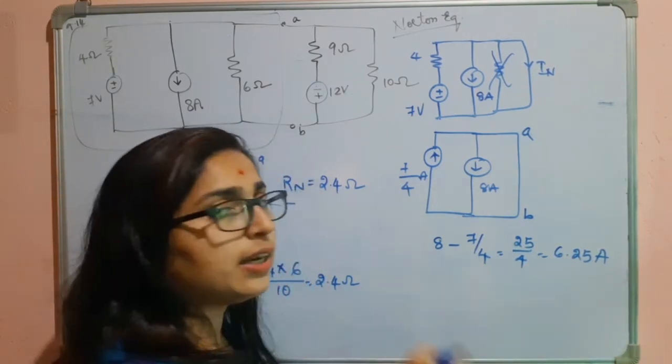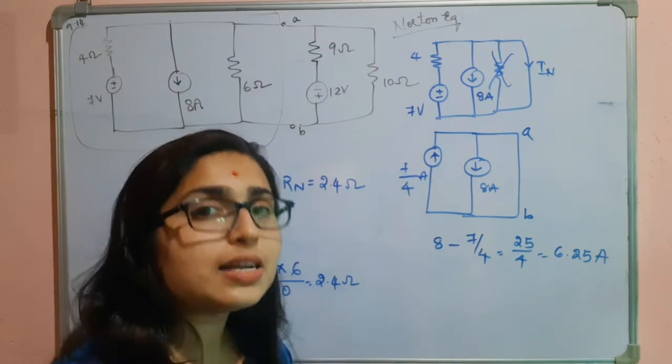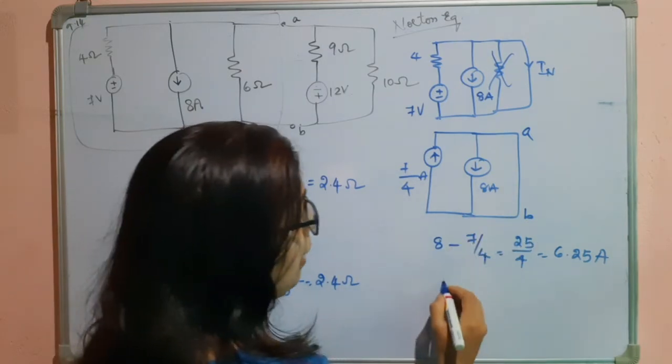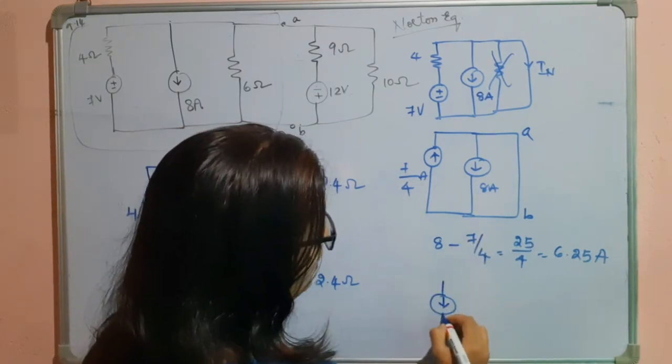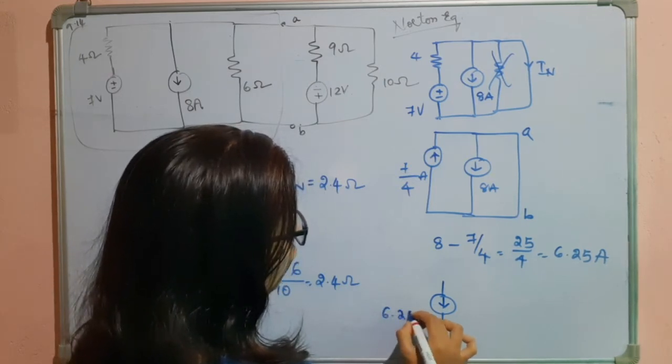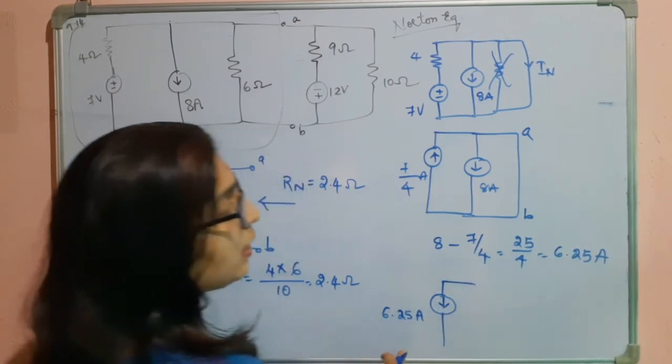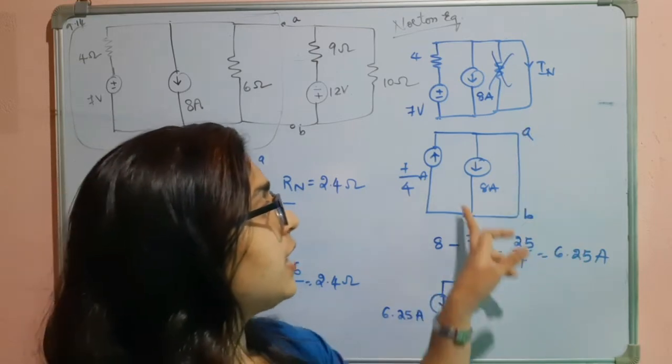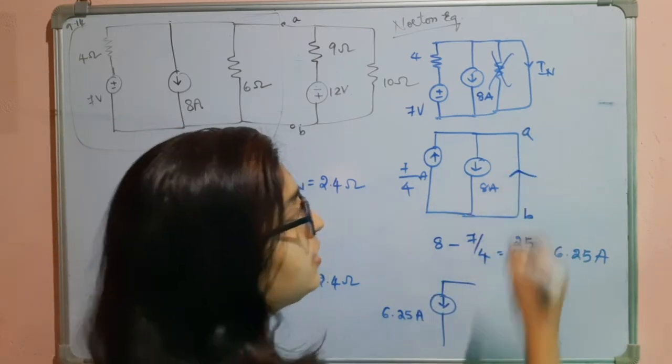So what will be the direction? The direction will be of the larger magnitude source, that is 8 amperes. So it will be in this direction, 6.25 amperes. So this will be the current and it is flowing in this direction.